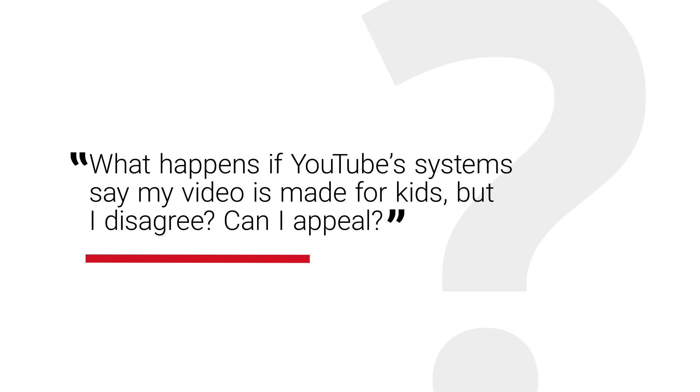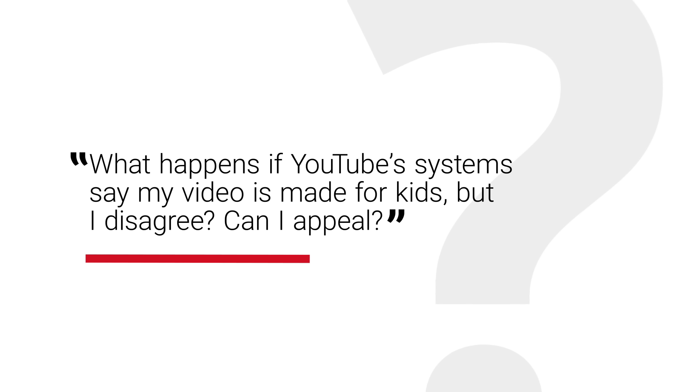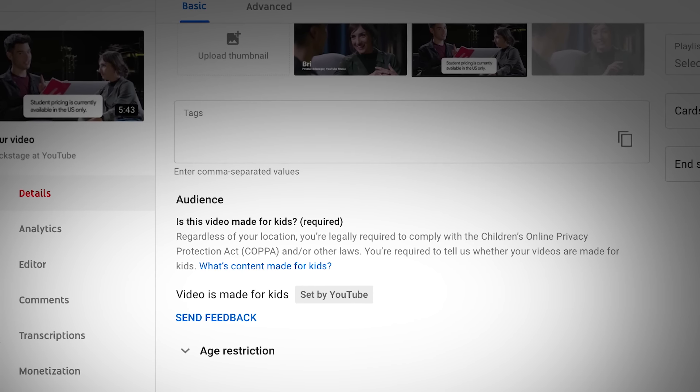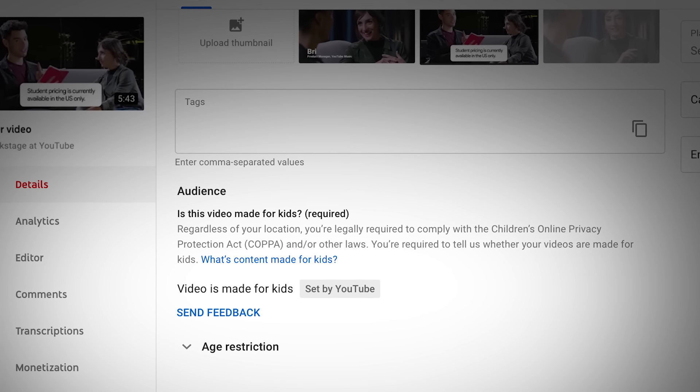What happens if YouTube systems say my video is made for kids, but I disagree — can I appeal? If you've not yet set your audience for your video and YouTube has set it for you to comply with legal obligations, you can choose the option that you believe is correct for this video. If you've already set your audience and we detect error or abuse, you still have the option to use the send feedback button if you disagree. You can find this in your video's Details tab in YouTube Studio.